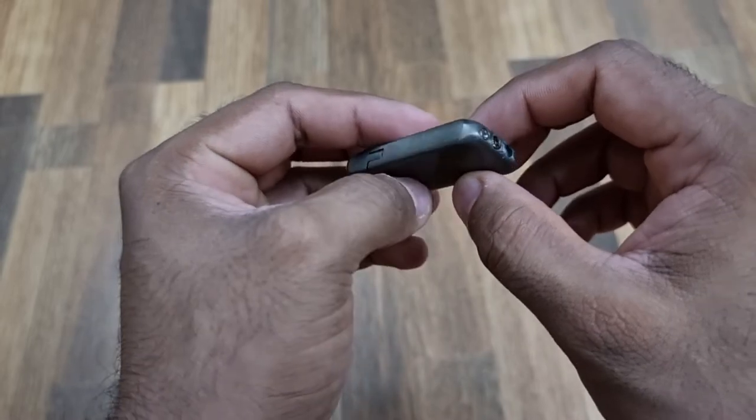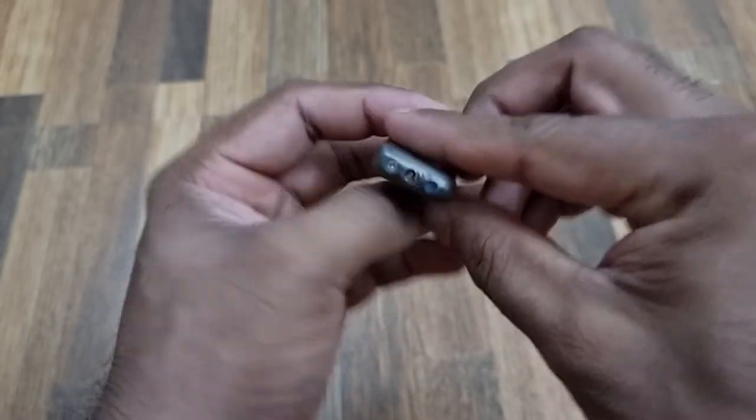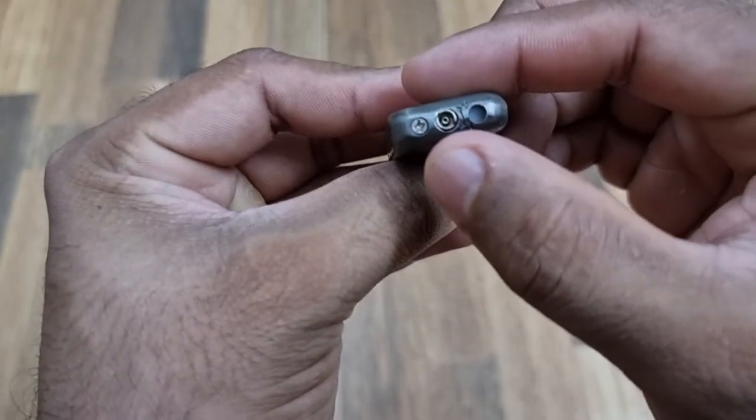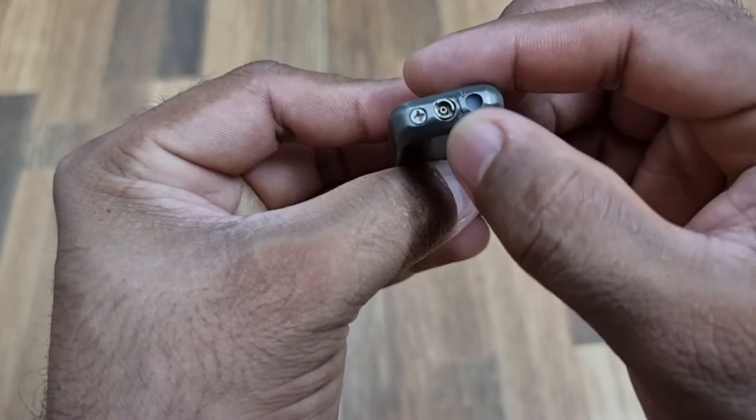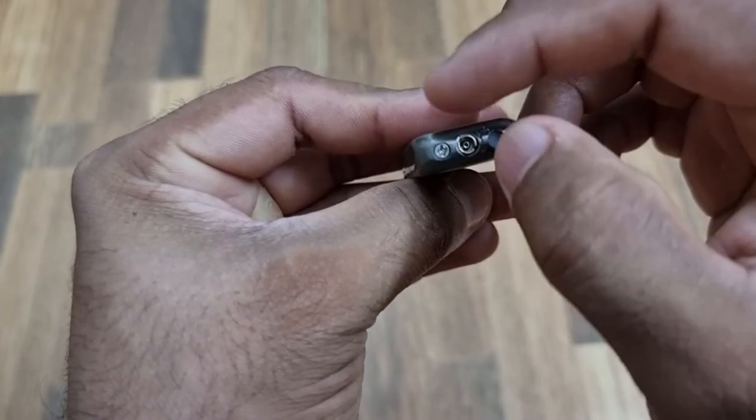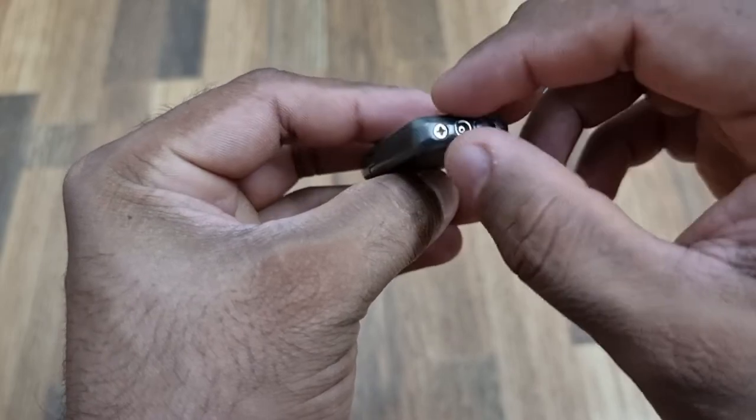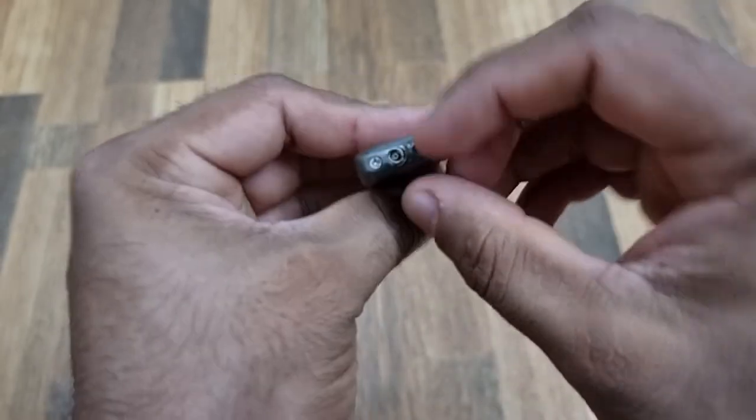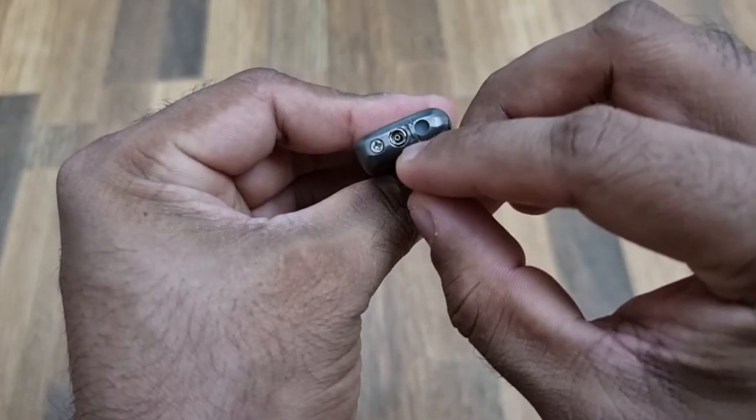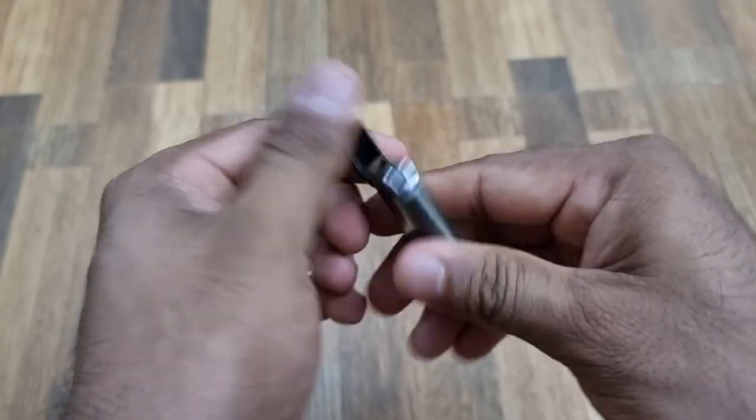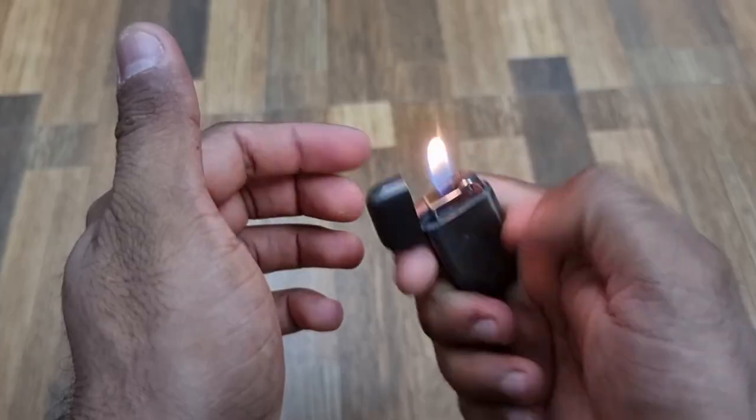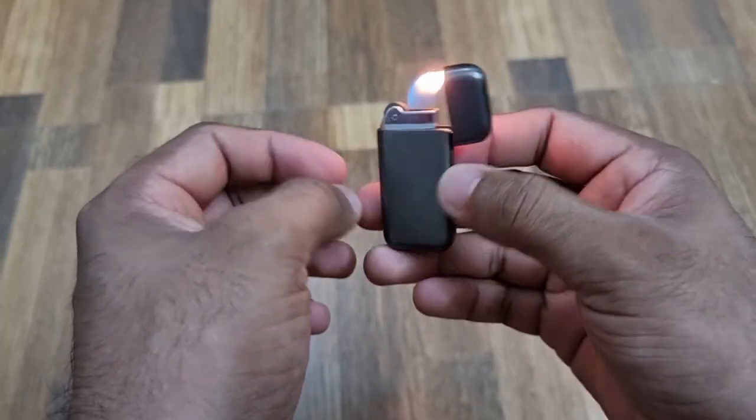And also the flame can be adjusted, positive and negative. So if you turn this side, the flame will be high. If you turn this side, the flame will be low. Nice little lighter.